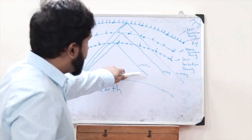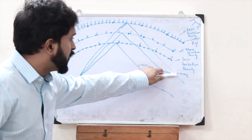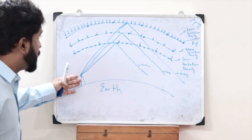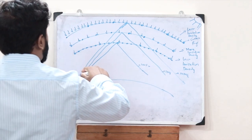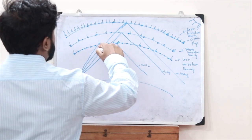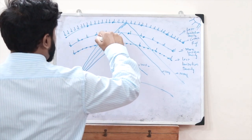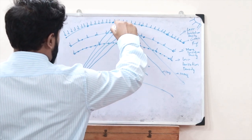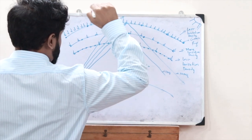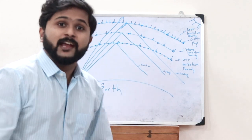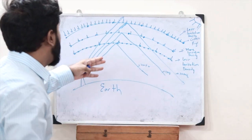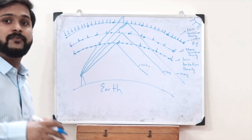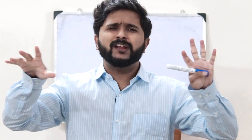The frequency range for sky wave propagation is 2 to 30 megahertz. If the transmitter generates a signal greater than 30 megahertz, it penetrates the first layer, then the second layer, then the third layer, and goes into space. The signal will not come back to the surface of the earth — we lose that signal entirely if its frequency is greater than 30 megahertz.